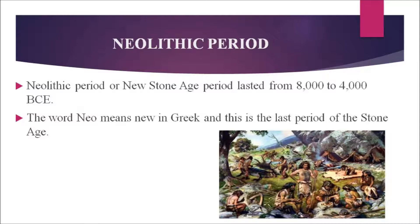The Neolithic period, or new stone age, lasted from 8,000 to 4,000 BCE. The word 'neo' means new in Greek, and 'lithos' means stone. This is the last of the three stone age periods — after Paleolithic and Mesolithic — and is called the new stone age period.